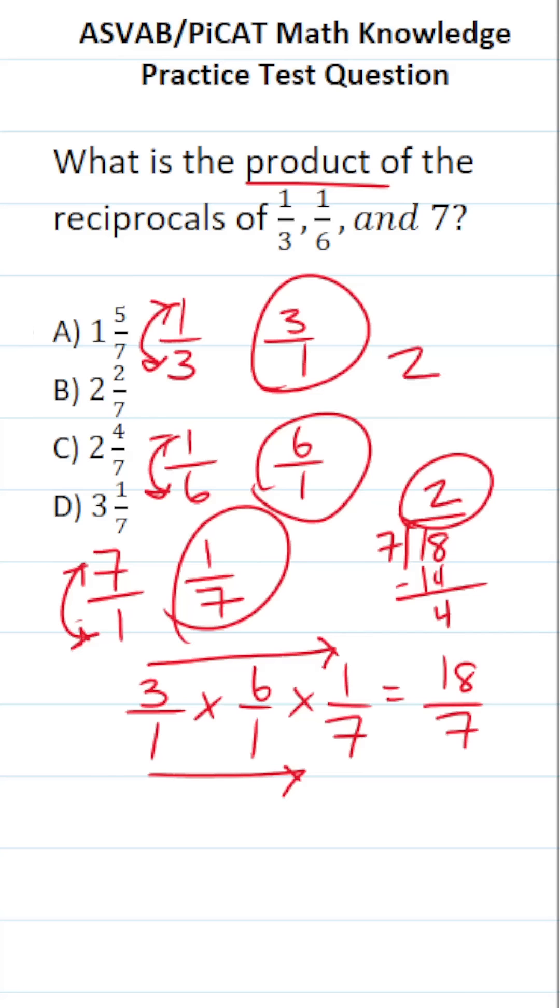This 2 is going to be our whole number. This remainder of 4 is going to be the numerator. And this 7 is going to be our denominator. So this is 2 and 4/7, which you can see is answer choice C.